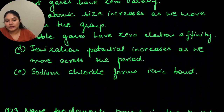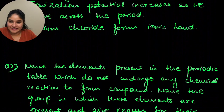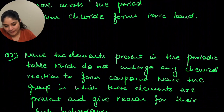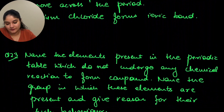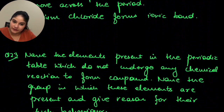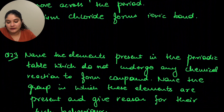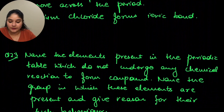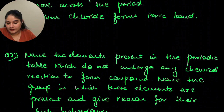Name the elements present in the periodic table which do not undergo any chemical reaction to form compounds, name the group, and give reasons. The answer is elements like helium, neon, and argon — commonly called inert gases, present in group 18. These elements cannot undergo any chemical reaction as they have 8 electrons in the outermost shell and have a completely stable configuration.